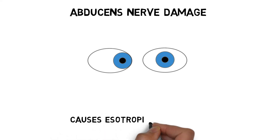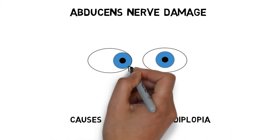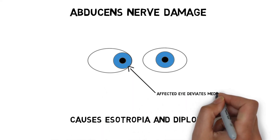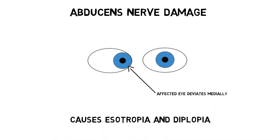Damage to the abducens nerve causes impairment in the ability of the eye the nerve supplies to move laterally, and a condition called esotropia, in which the eye that's affected deviates medially. In this case, the medial deviation is due to the loss of abducens function and the unopposed action of the medial rectus muscle. This also leads to diplopia, or double vision.